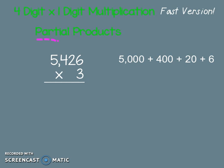So let's start here. The 5,426 expanded out means 5,000 + 400 + 20 + 6. Let's start on the right with our 3 times 6.